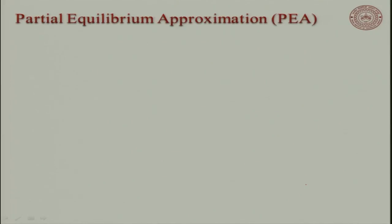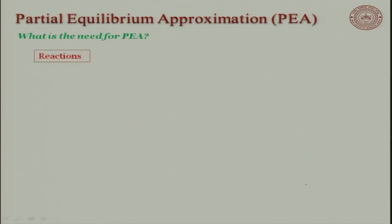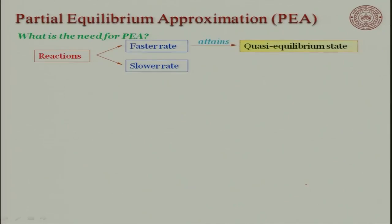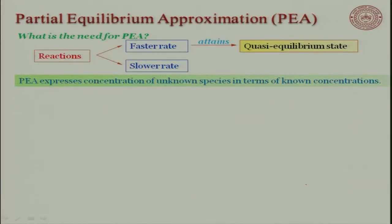Let us now look at the partial equilibrium approximation. In quasi-steady state, a species is attending steady state; but in partial equilibrium, we are saying a reaction quickly attains equilibrium because it has a very fast rate. We call it a quasi-equilibrium state or partial equilibrium. The partial equilibrium expression relates the concentration of unknown species in terms of known concentrations.